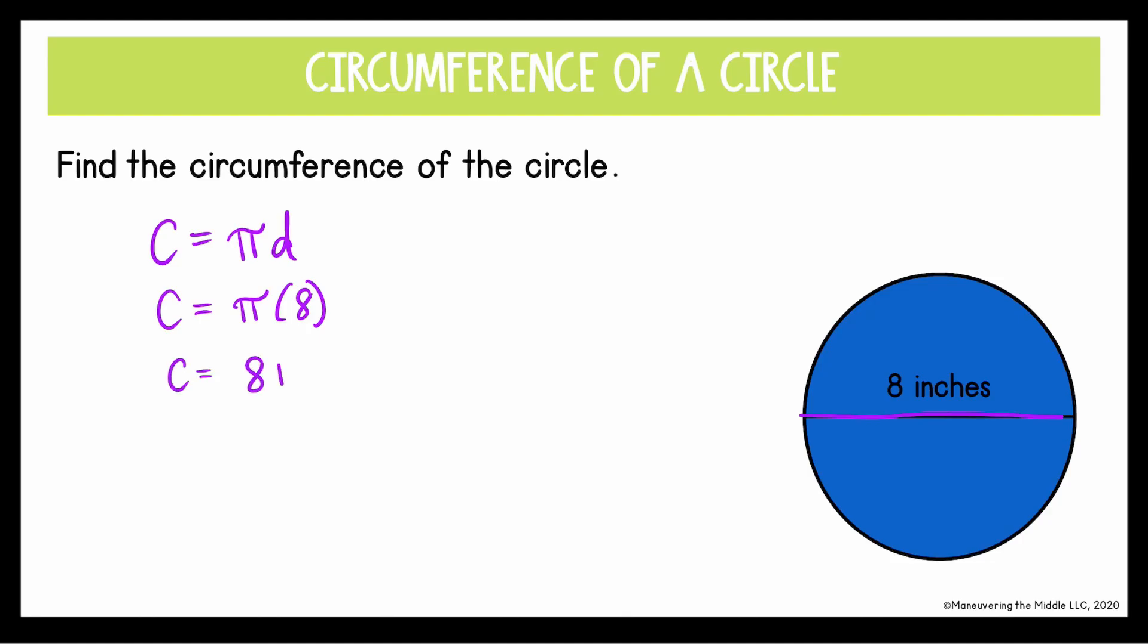I do want to note here that sometimes they ask for a solution in terms of pi, and you would actually stop here if that's what they wanted. In terms of pi means that you wouldn't multiply by pi. You would leave it as 8 pi. It doesn't say that here, so we'll go ahead and multiply 8 times our estimate of 3.14. And when we do that, we get 25.12. And don't forget your unit of measurement, which in this problem is inches.